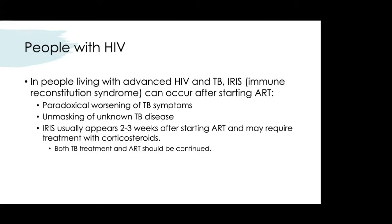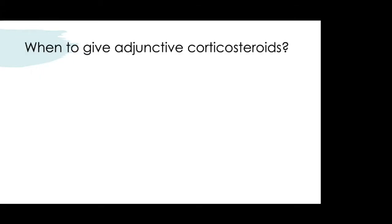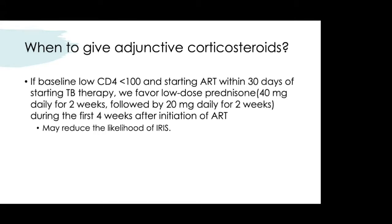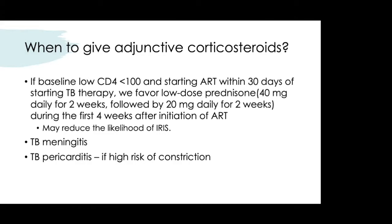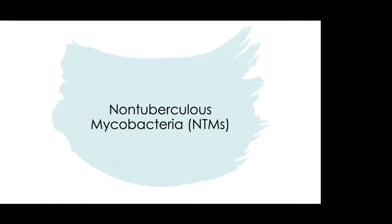IRIS for TB usually appears within 2–3 weeks after starting ART and may require treatment with corticosteroids, but it is important to continue both TB treatment and ART. Adjunctive corticosteroids are given when a patient has HIV with a baseline CD4 less than 100 and starts ART within 30 days of starting TB treatment — 40 mg daily for 2 weeks then 20 mg daily for 2 weeks. Steroids are also indicated for TB meningitis and TB pericarditis to reduce the risk of constriction.